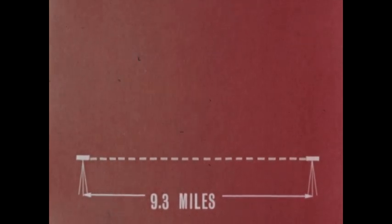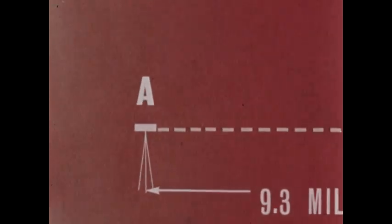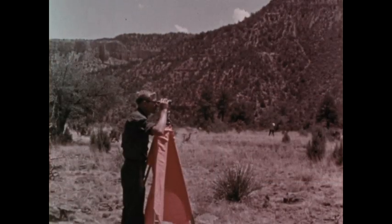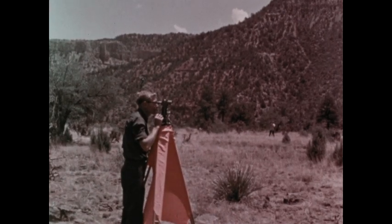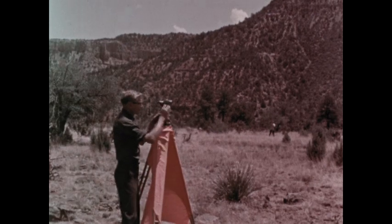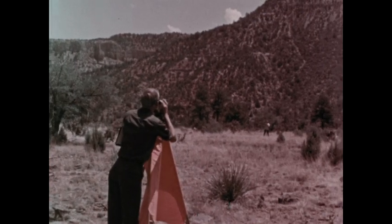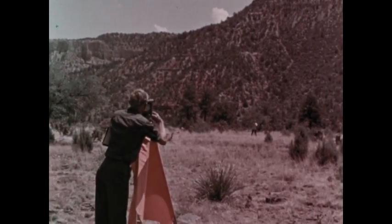Now by changing instruments, we can use this measurement between points A and B to locate a third point, say point C. Standing at point A, the surveyor uses a theodolite, a sort of protractor with a telescope. He first measures the angle at A between his baseline and a line running to the new point at C.